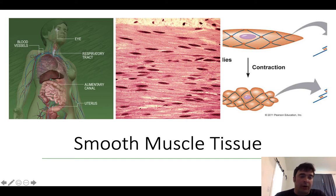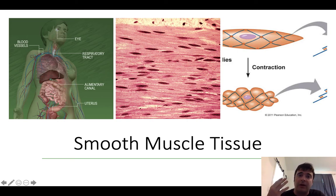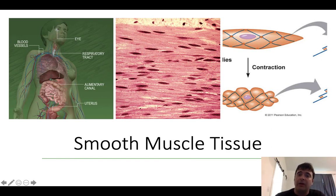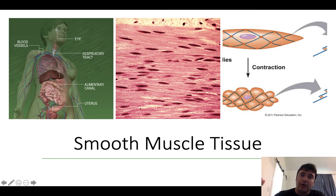Smooth muscle tissue is found all over the place and is a really important tissue. It regulates the movement of substances through your body and regulates the amount of light that hits the retina — the iris, the colored part of your eye, is actually smooth muscle tissue. It constricts to reduce light into the eye as a protective mechanism and dilates to increase light. It does this independently because it's an involuntary tissue, regulated by mechanisms not under conscious control.